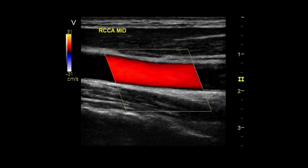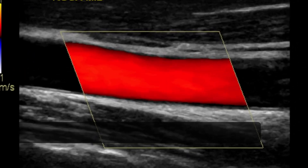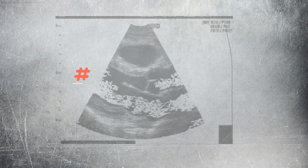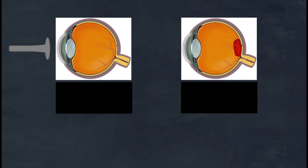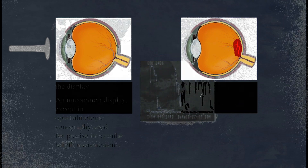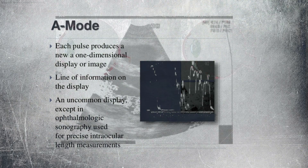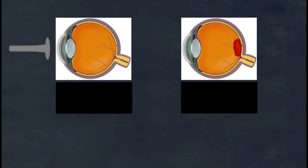A Mode is the simplest type of ultrasound. A single transducer scans a line through the body with the echoes plotted on a screen as a function of depth. Therapeutic ultrasound, aimed at a specific tumor or calculus, is also A Mode, to allow for pinpoint accurate focus of the destructive wave energy.